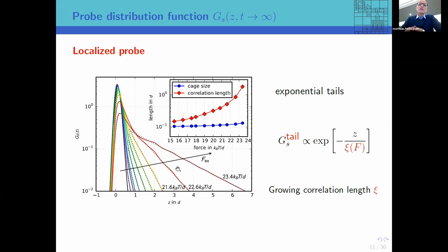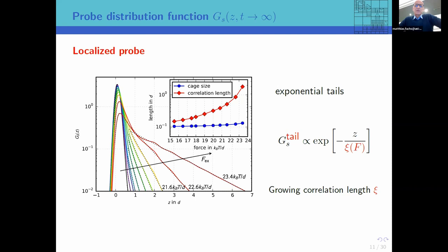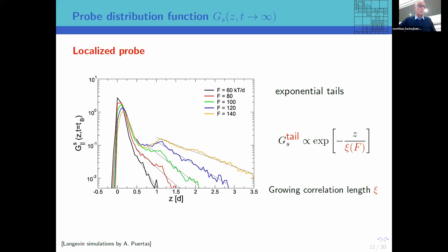There is also probability leaking out in front, making larger and larger steps. The probability distribution develops an exponential tail in the direction of the force. The probability as a function of z in units of diameter shows the particle slightly localized and moving somewhat in force direction, but also with this exponential tail whose correlation length becomes larger and larger upon increasing the force. At a critical force, the particle can be pulled out of its local cage and starts moving through the amorphous solid. Simulations also show similar behavior for different densities and forces.